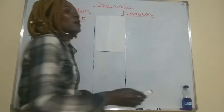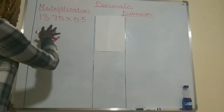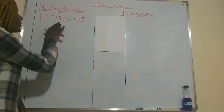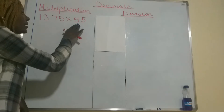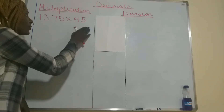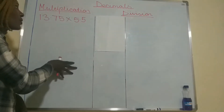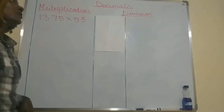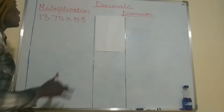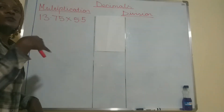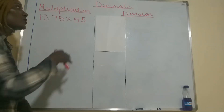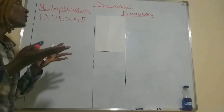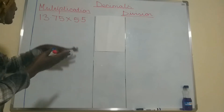For example, if you have been given 13.75 multiplied by 5.5, I'm going to begin with multiplication and then go to division. When you look at this number, it's in horizontal form, so what you're supposed to do is put it vertically in order to multiply it easily.